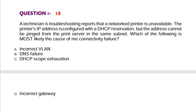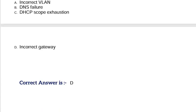Question: A technician is troubleshooting reports that a networked printer is unavailable. The printer's IP address is configured with a DHCP reservation but the address cannot be pinged from the print server in the same subnet. Which of the following is most likely the cause of the connectivity failure? Option A, incorrect VLAN. Option B, DNS failure. Option C, DHCP scope exhaustion. Option D, incorrect gateway. Correct answer is Option D.